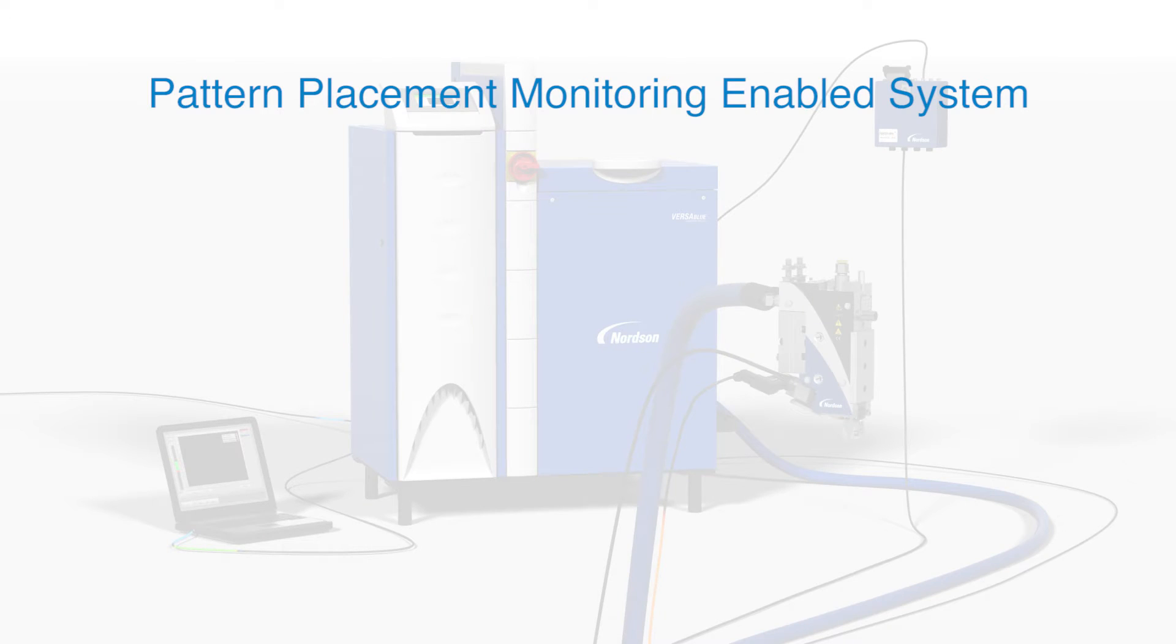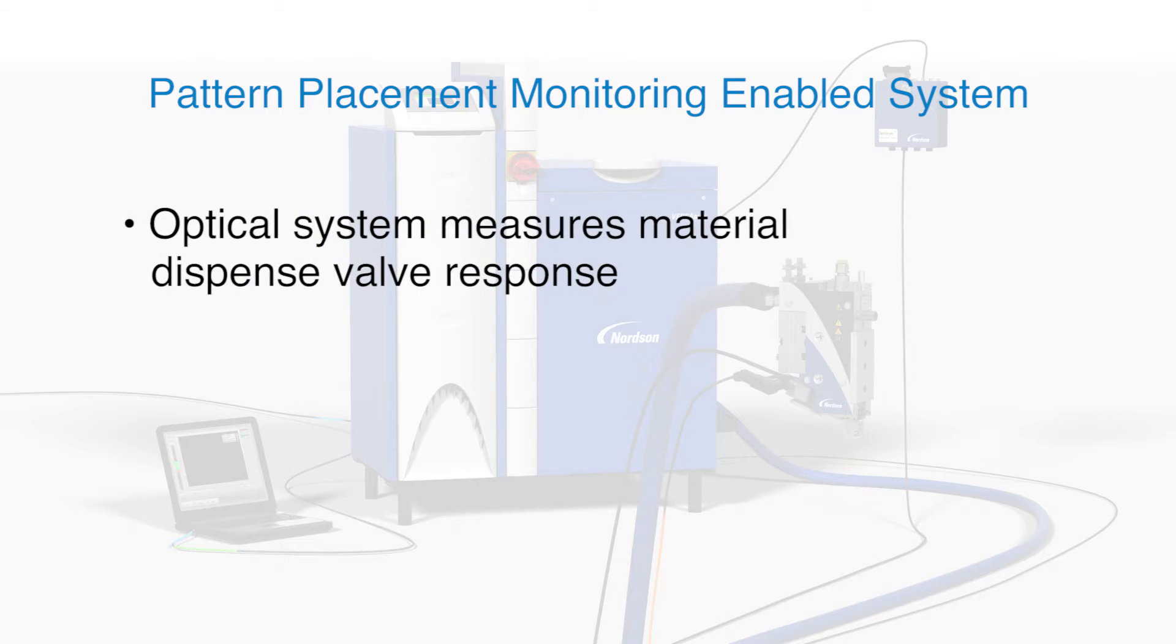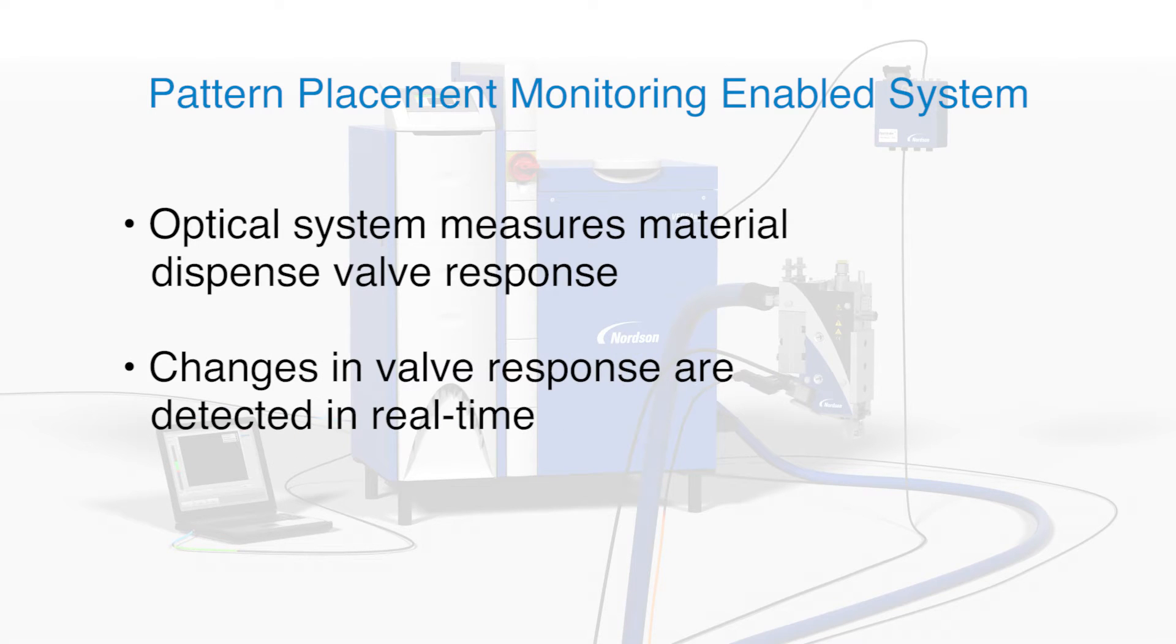As with material delivery, monitoring and measurement is the first step to manage material pattern placement. An optical sensor is installed to monitor the dispense valve for any changes in valve response that could cause a shift or drift in the pattern placement. Optical sensors can be used with a variety of Nordson applicators.